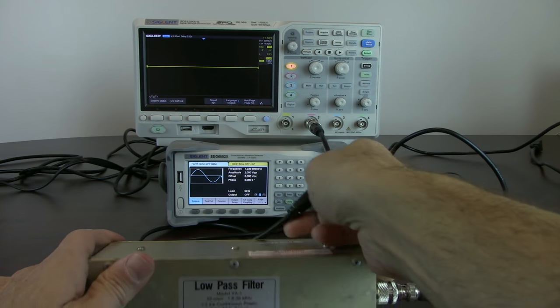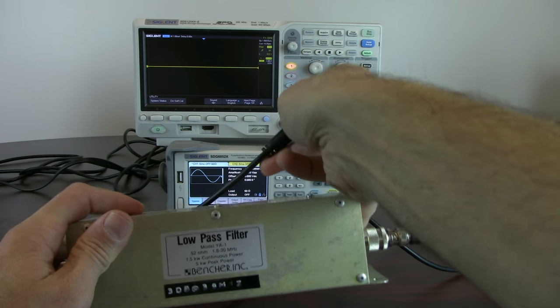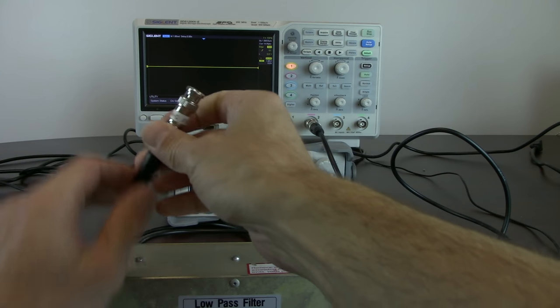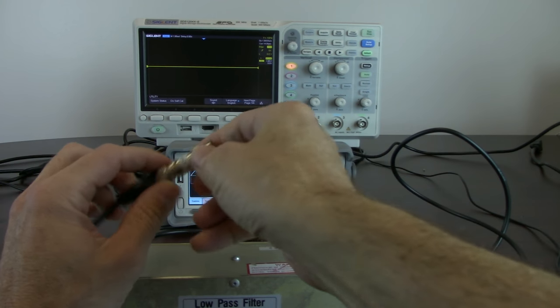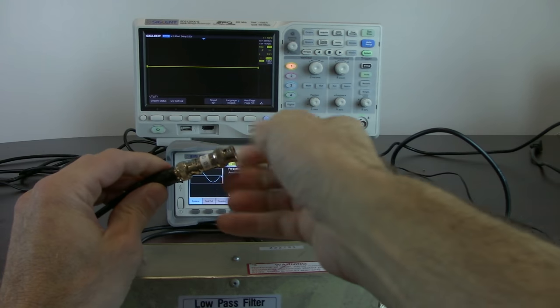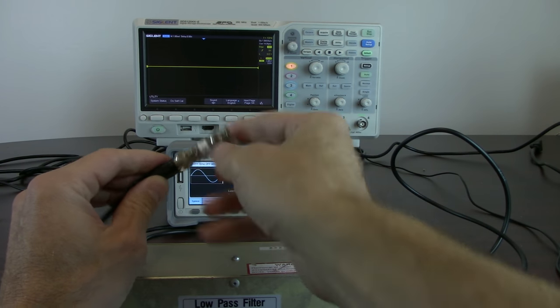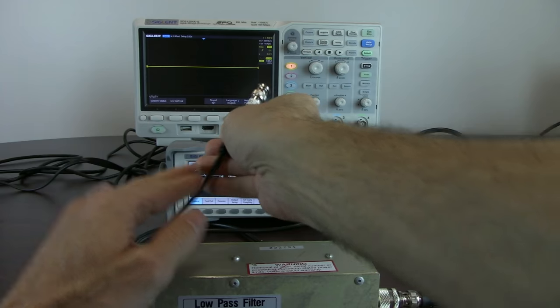Since everything in our measurement is 50 ohms, the generator as well as the low-pass filter, we want to have impedance matching so we minimize our reflections and that will minimize the effects on the phase. So we're going to use that 50 ohm termination both on channel 1 and on channel 2.